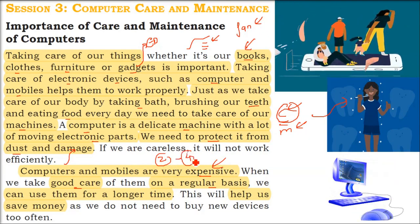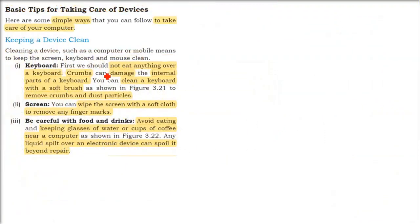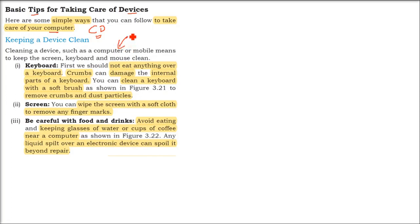For example, your battery may work for two years — why not take care so that it works for three to four years? You can use it for a longer time and save money. There are very simple tips for taking care of your computing devices that can be done every time, everywhere. First thing: keep your device clean. Dust is the enemy of your device.